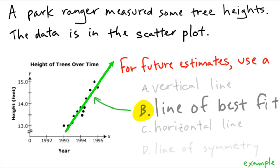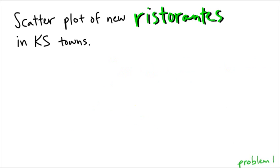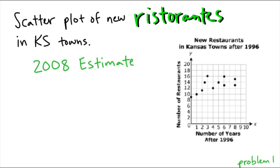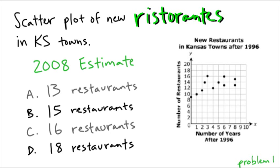Okay, we'll be using that today with our scatter plots. Next, we have a scatter plot of new ristorantes in Kansas towns — that is an Italian word, I just wanted to say it, so I wrote it. Here's the scatter plot, and if we were to take a 2008 estimate, will there be 13, 15, 16, or 18 restaurants?